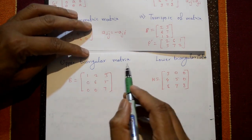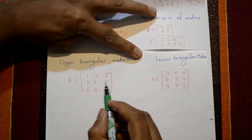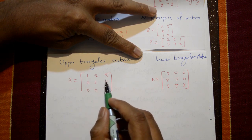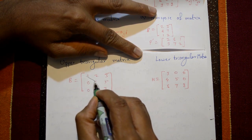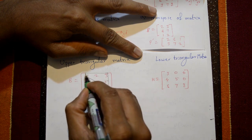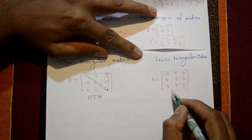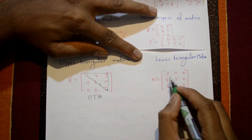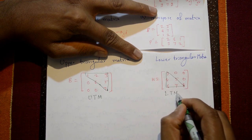Next are upper triangular and lower triangular matrices. A square matrix having all elements below the principal diagonal as zero is called an upper triangular matrix. A square matrix having all elements above the principal diagonal as zero is called a lower triangular matrix. These are the upper and lower triangular matrices.